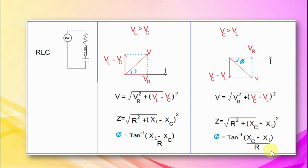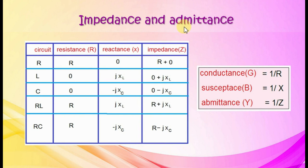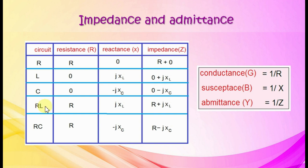Impedance of different single-phase circuits: for a resistive circuit, impedance is R. For an inductive circuit, impedance is XL with direction plus J. For a capacitive circuit, impedance is Xc with direction minus J. For an RL circuit, impedance is R plus JXL. For an RC circuit, impedance is R minus JXc. Conductance is reciprocal of resistance, susceptance is reciprocal of reactance, and admittance is reciprocal of impedance.